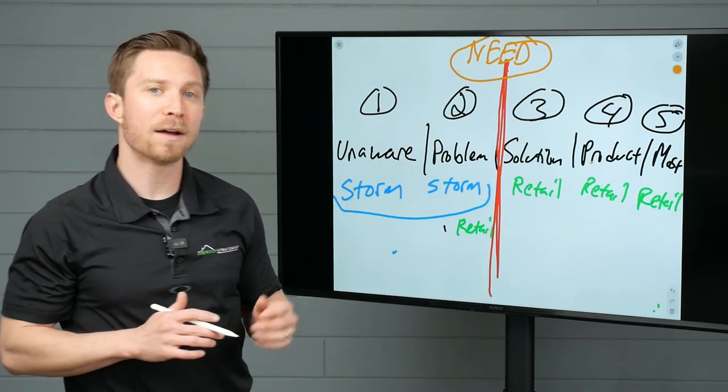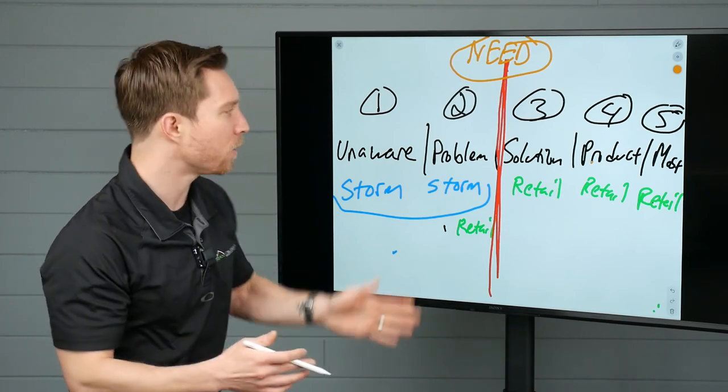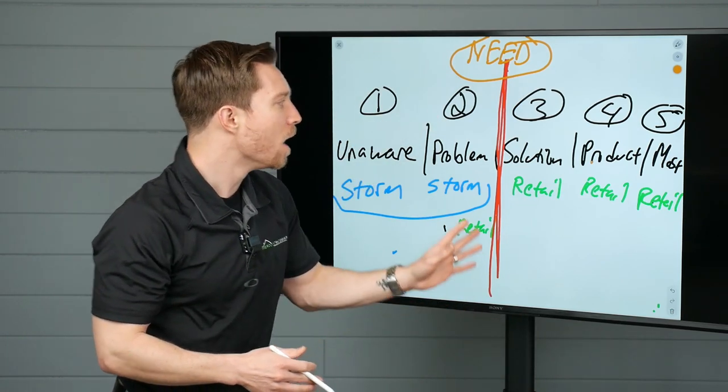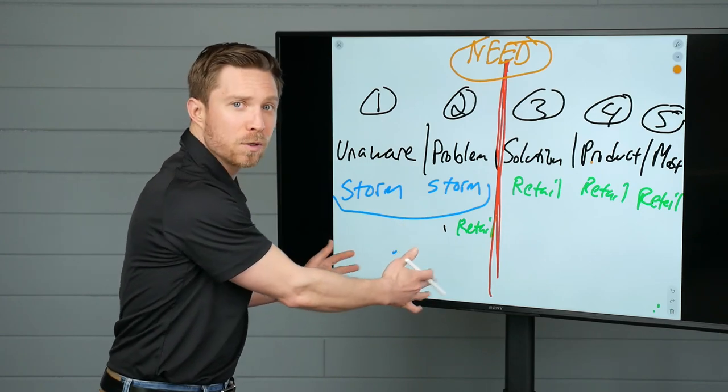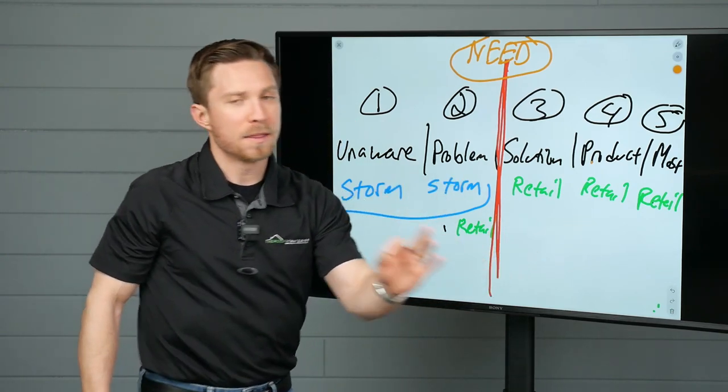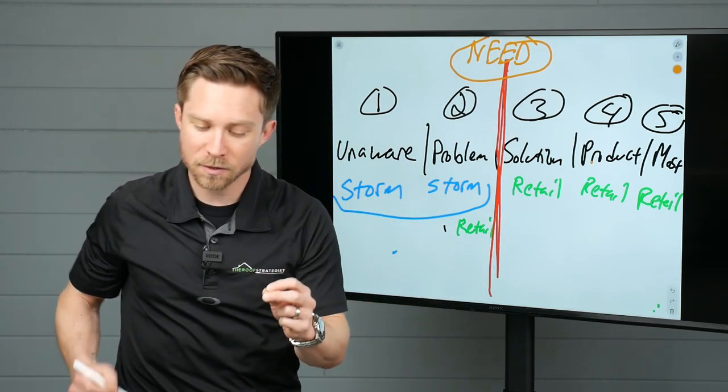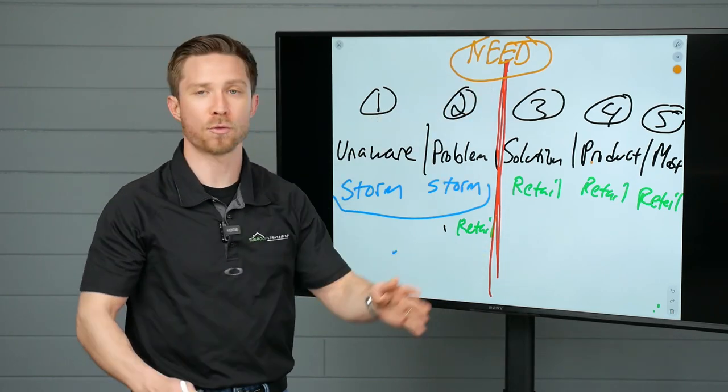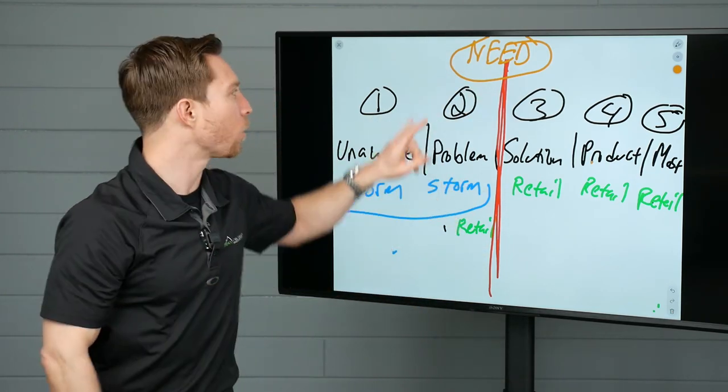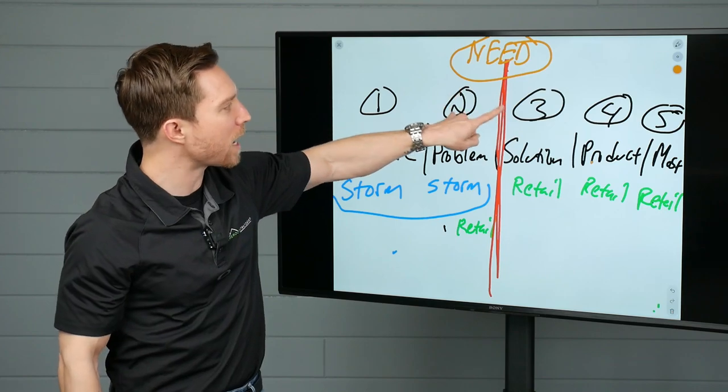So here it is for you. Eugene Schwartz, five levels of awareness and how there is truly a divide between selling storm damage roofs and retail roofs. The key takeaway here is to focus on this concept of need in the three dominoes, trust, need, money. Our need is the big difference that straddles these two.